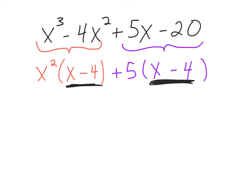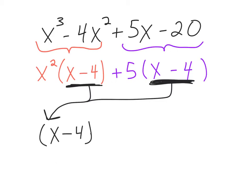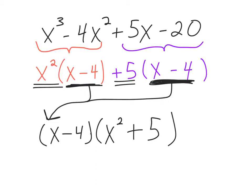My common grouping is x minus four, so I'm going to pull out that x minus four and factor out that group. Then in the next parentheses, what's going to go there is what was remaining — I had an x squared in front, and I had a positive five in front as well, so those go in the next parentheses.